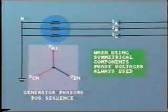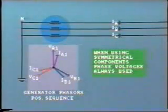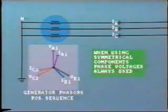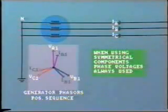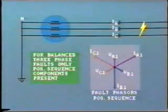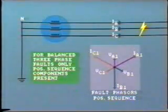For example, VA1, VB1, and VC1. With a balanced load, the current phasors produced by the generator are also similarly balanced. They'll look like this — once again, marked IA1, IB1, and IC1. For study of balanced faults, such as a three-phase short circuit or three-phase to ground, only these positive sequence components are needed.